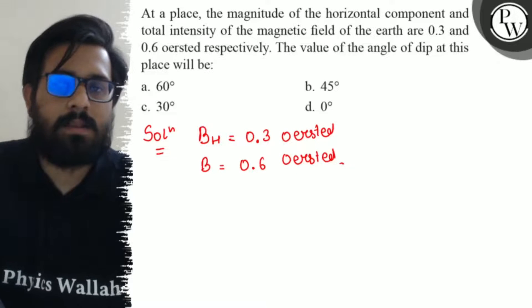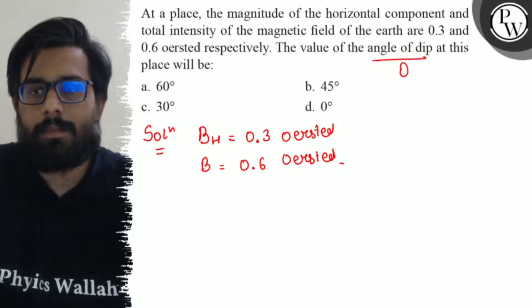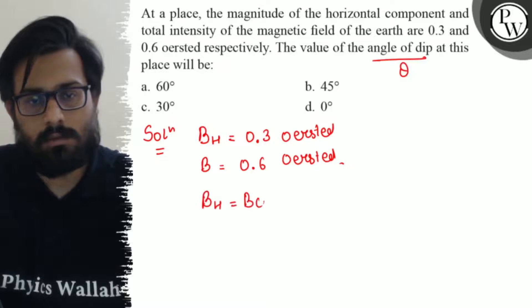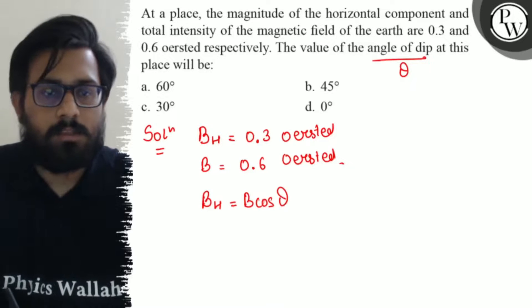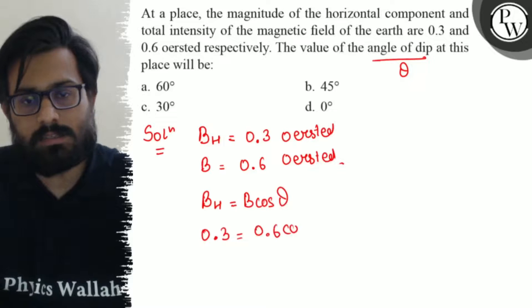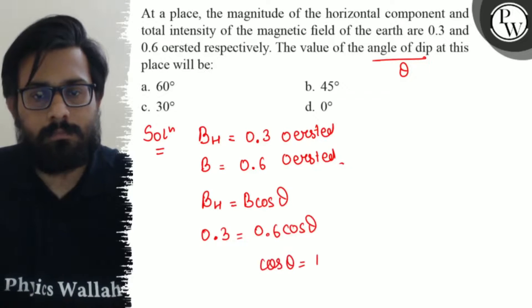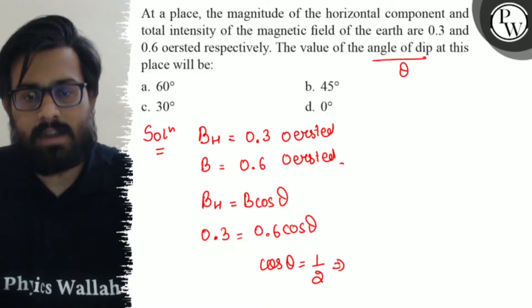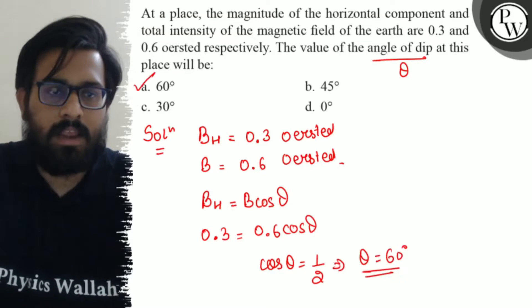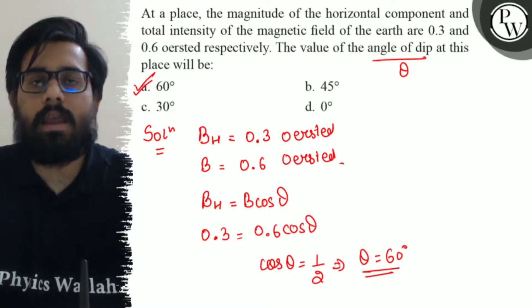Let's say the angle of dip is theta. We know the relation BH equals B cos theta. So BH is equal to 0.3, B is equal to 0.6 cos theta. So cos theta equals 1 by 2, which means theta is 60 degree. Cos 60 equals 1 by 2, so the angle of dip is 60 degree and hence option A is absolutely correct.